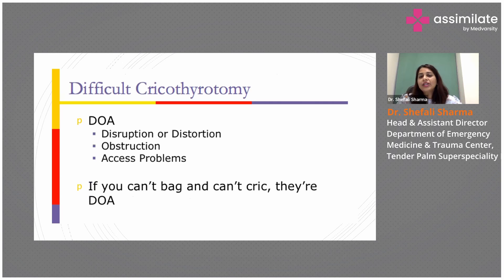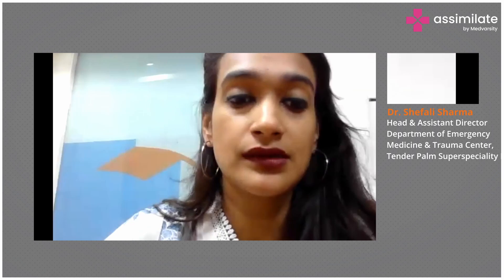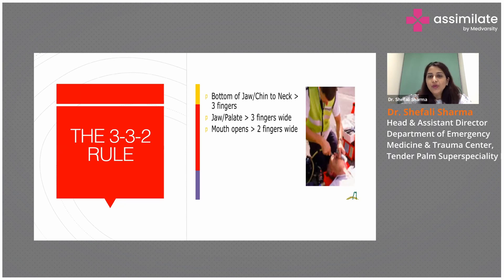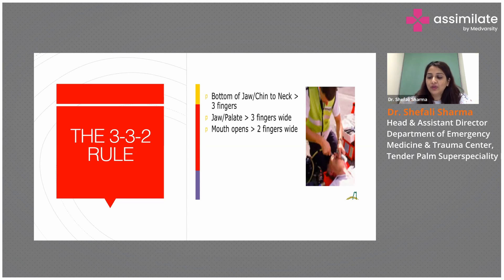A difficult airway is found where there is disruption or distortion of the neck, or obstruction in the airway. The 3-3-2 rule states: three fingers should fit inside the mouth, the jaw to palate distance should be three fingers wide, the mouth opening should be at least two fingers wide, and the cricothyroid to hyoid distance should be two fingers.